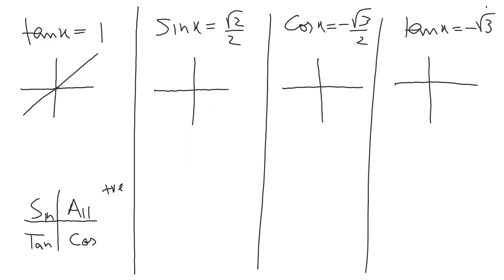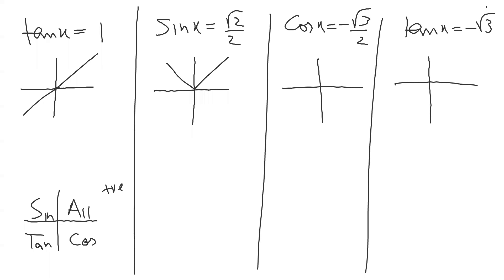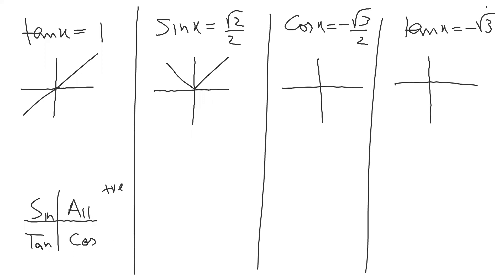So sine is positive in the first and second quadrant. Cosine is negative — cosine is positive in the first and fourth quadrant, and negative in the second and third.